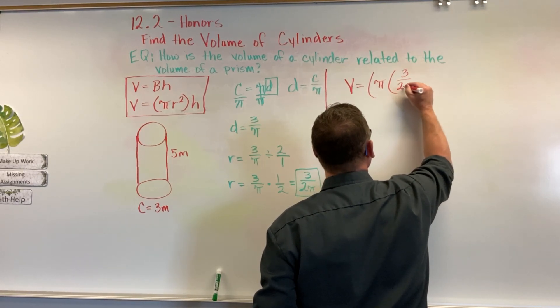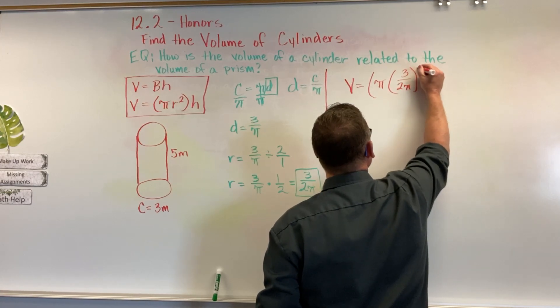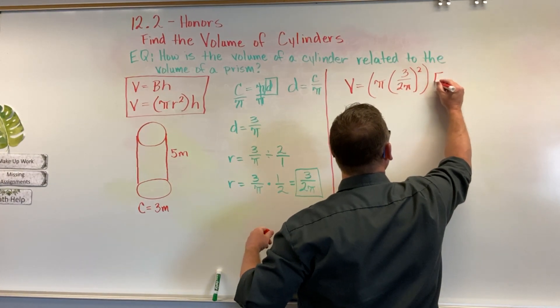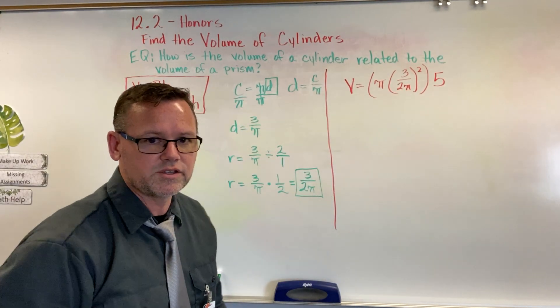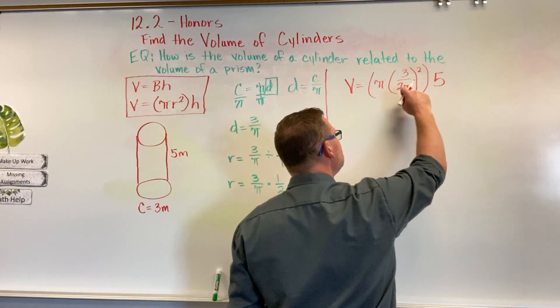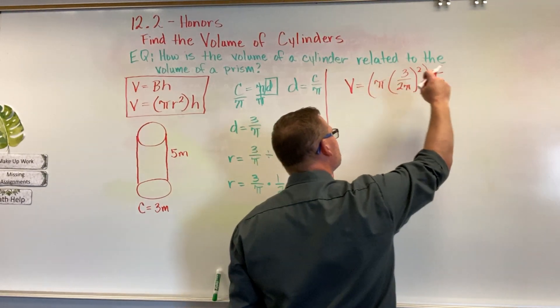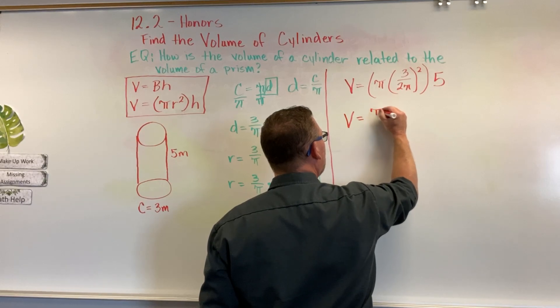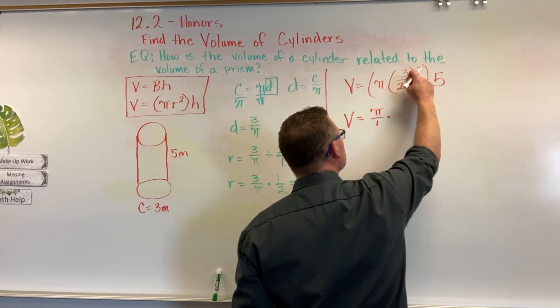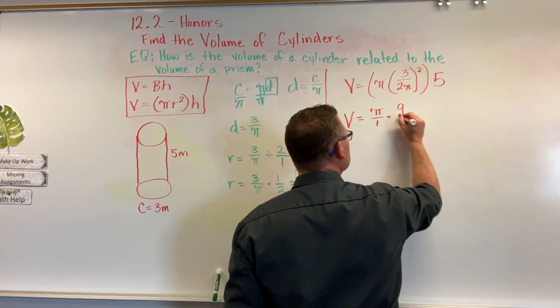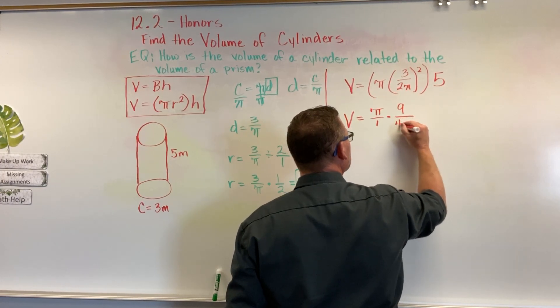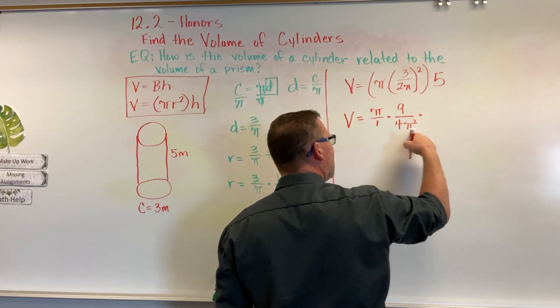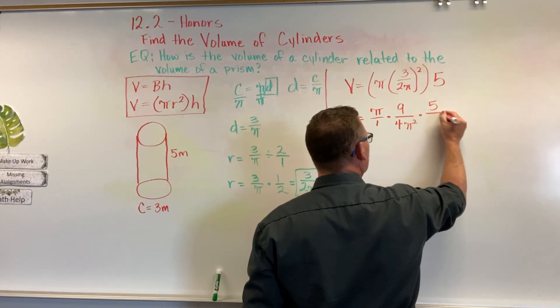Pi multiplied by 3 over 2pi, and I put parentheses around this because we need to square it, and then we multiply that by the height, which is 5. Now, I'm going to do two things here. I'm going to square everything that's in these parentheses and put these into fractions since I have a fraction here. So my volume equals pi over 1 multiplied by 3 squared is 9, over 2 squared is 4, over pi squared. Now remember, pi squared is simply pi multiplied by pi. And then, this is 5 over 1.